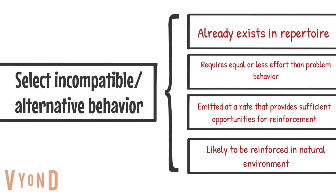For example, if I want the student to functionally communicate, I have to make sure I'm using the type of communication already in the repertoire — can they use words, or do they need gestures or a different communication device? I want to make sure the behavior requires less effort than the problem behavior, and when they exhibit the replacement behavior, it has to be far more reinforcing than the problem behavior. I also have to reinforce the use of functional communication.